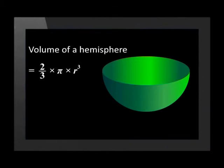We start with the formula for the volume of a hemisphere and substitute 5 in for the radius. Now we have 2 over 3 times pi times 5 cubed which is equal to 261.8 centimeters cubed.